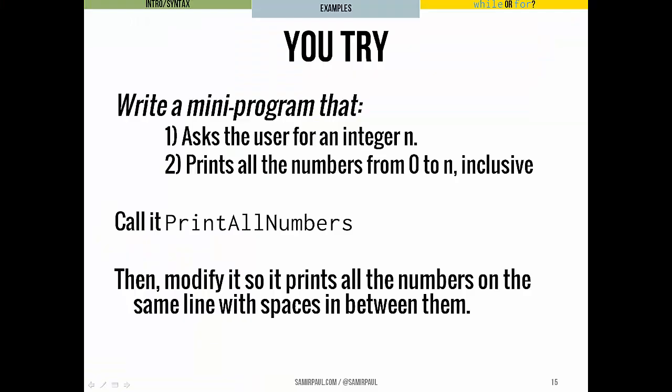You go ahead and try writing a pretty simple for loop. All we want is to ask the user for an integer n and we want to print out all the numbers from 0 to n inclusive. You can call it print all numbers. Then I want you to modify it so that you print all the numbers on the same line just with spaces in between them. That'll be a good little exercise for you to make sure you understand how to put together a basic for loop.